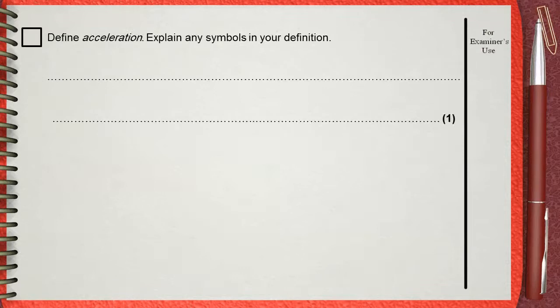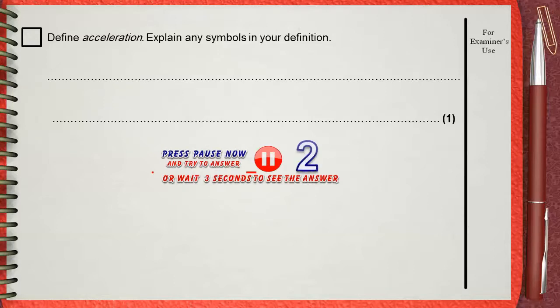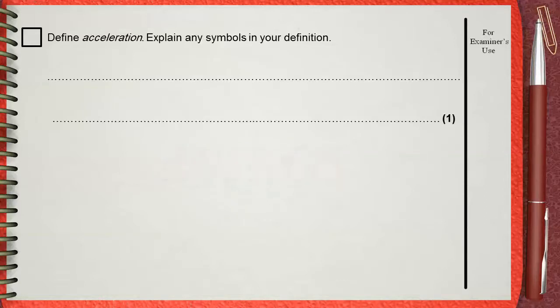Define acceleration. Explain any symbols in your definition. The best thing in defining physics terms is that you can simply give the mathematical rule, but you must explain what each letter stands for. Acceleration a equals v minus u over t.